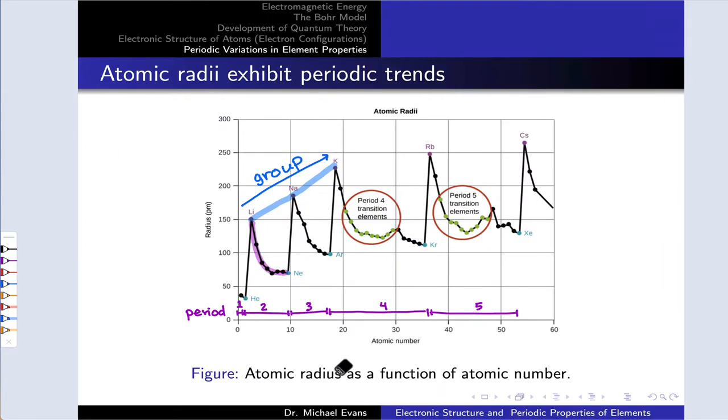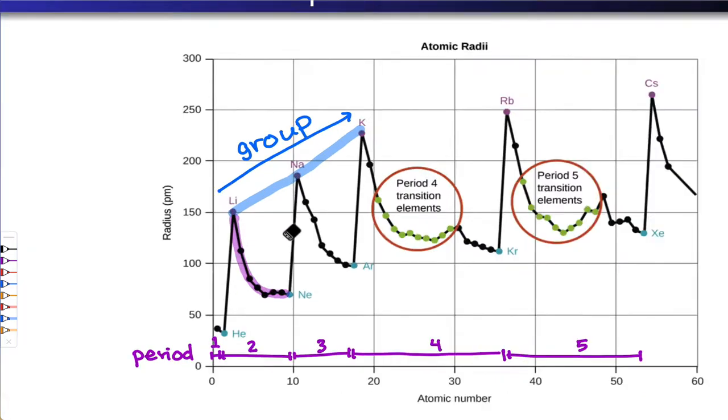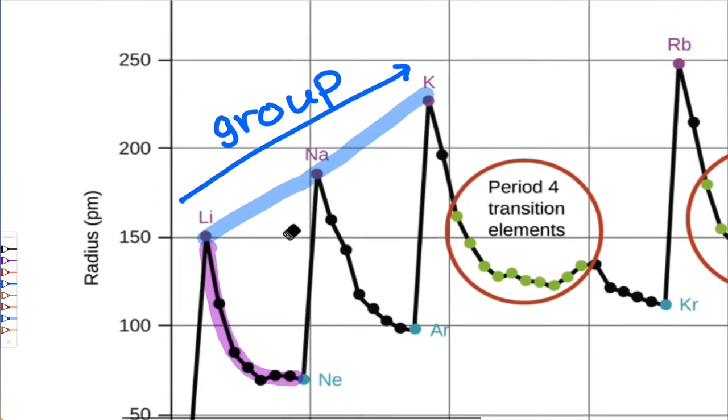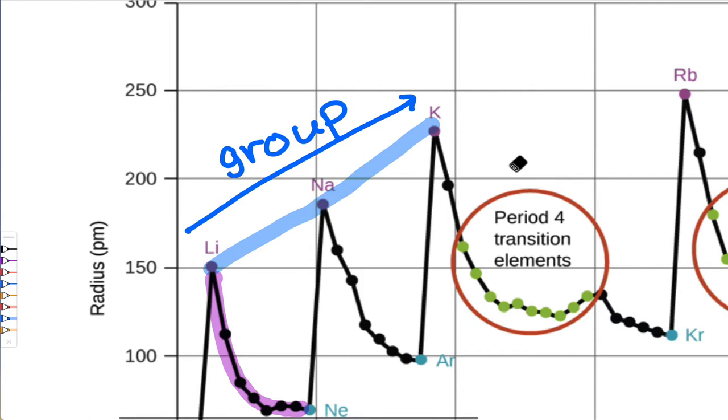Here's a graph that shows you the periodic trends in atomic radius. We can look at specific points on the graph to elucidate the trends moving down a group and across a period. So let's look at the group trend first. For that, we can zero in on lithium, sodium, and potassium right here. We're comparing group elements that are in the same group within different periods: period two, period three, period four.